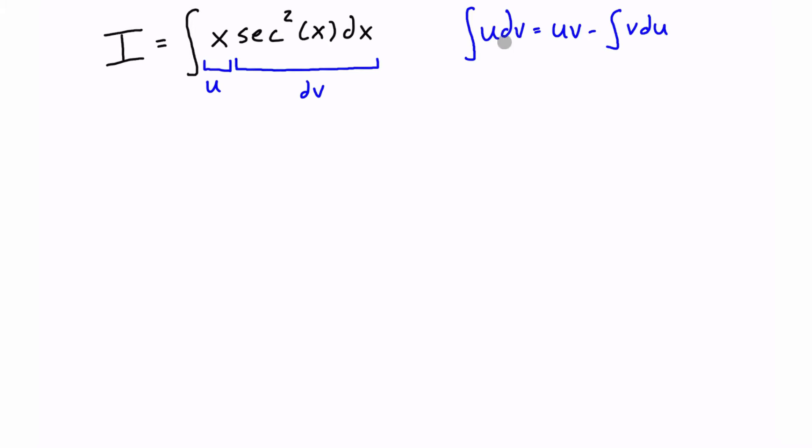This is the left hand side of the equation, and we need to find du and v, and then we'll have all the variables or elements that we need to put into this, and then we can just plug and chug.